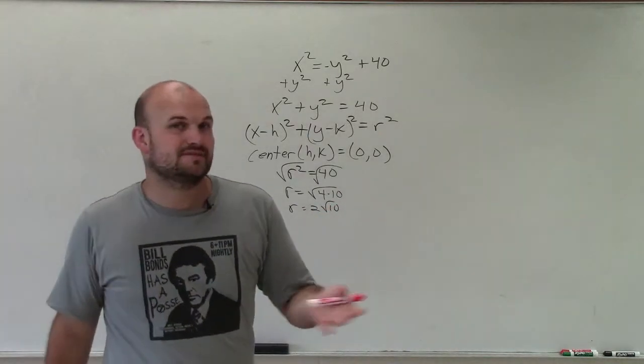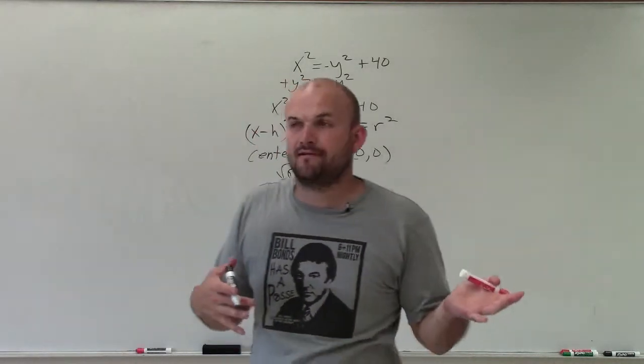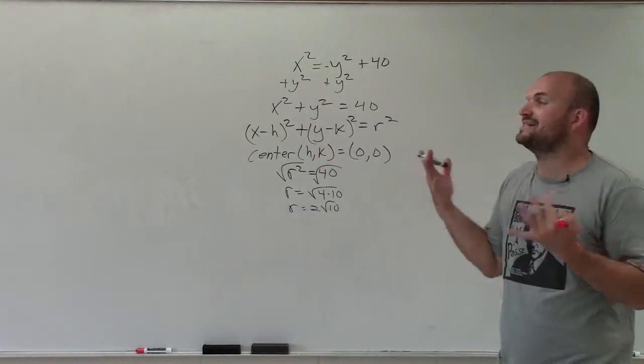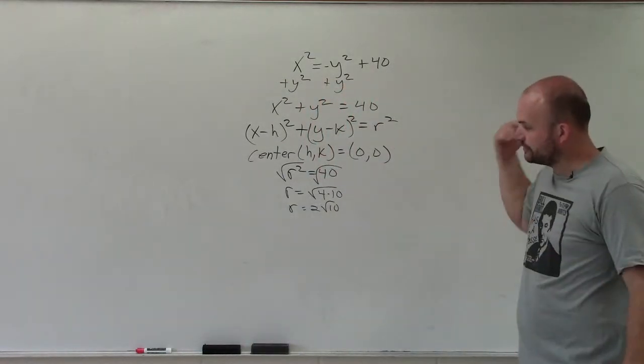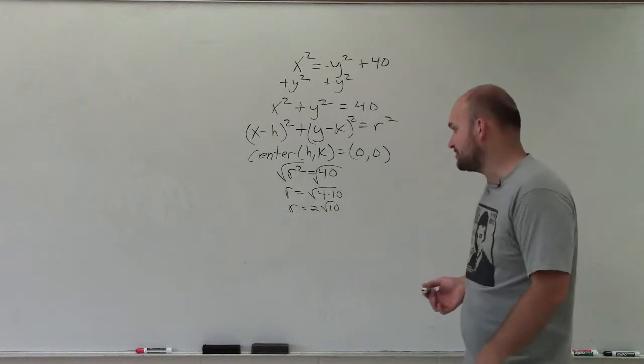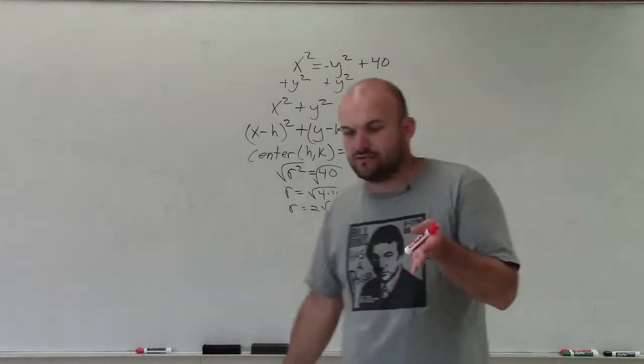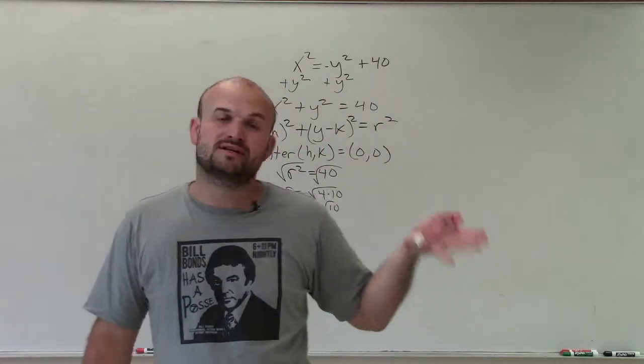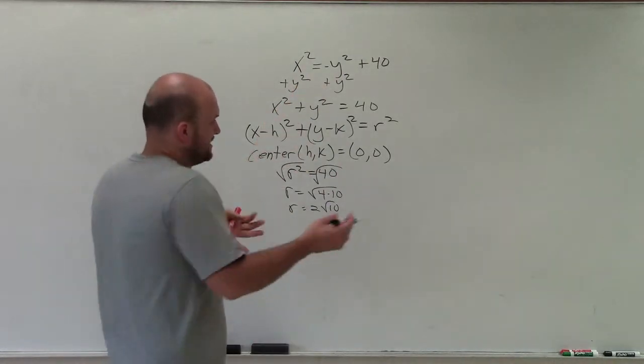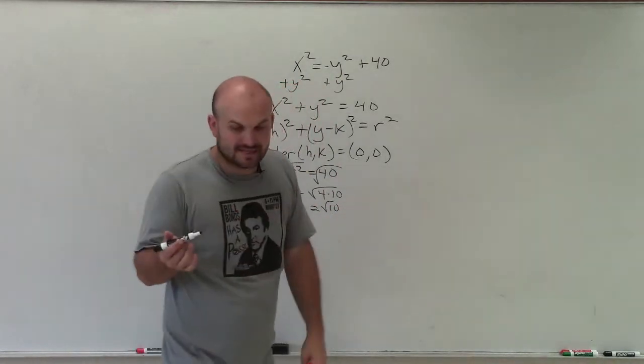Now, you can definitely just estimate this, because when we're graphing, especially for me, I can't get it very exact with what I'm going to be graphing with you. And you can use a decimal approximation as well. The square root of 40 is going to be anywhere between 6 and 7, because 6 squared is 36, 7 squared is 49. So it's going to be a decimal between 6 and 7.